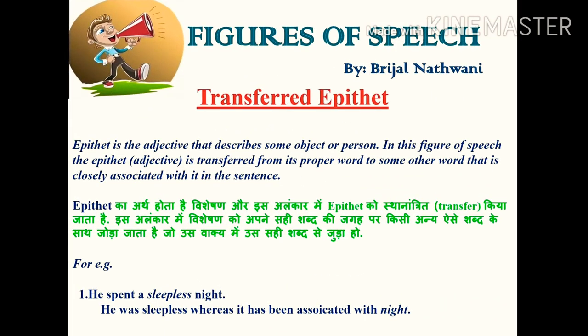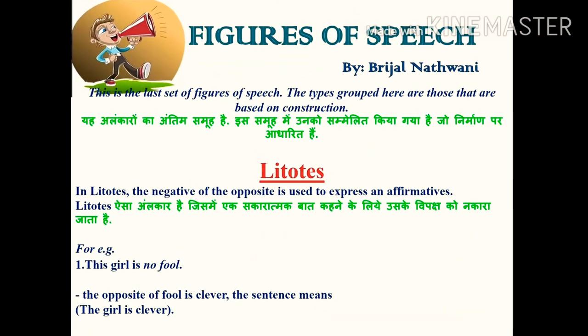The next figure of speech is transferred epithet. An epithet is an adjective that describes some object or person. In this figure of speech, the epithet (adjective) is transferred from its proper word to some other word that is closely associated with it in the sentence. For example: 'He spent a sleepless night.' Here, sleepless is associated with night — he was sleepless, but it has been transferred to night.